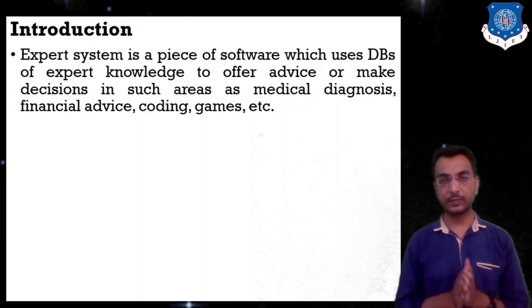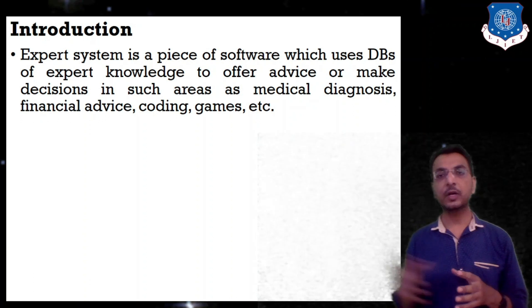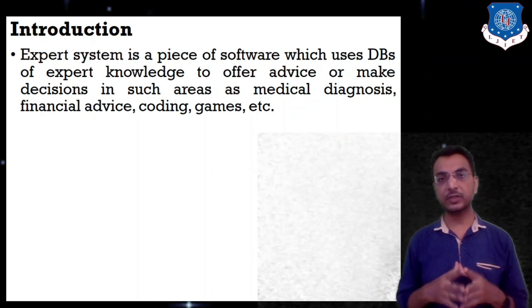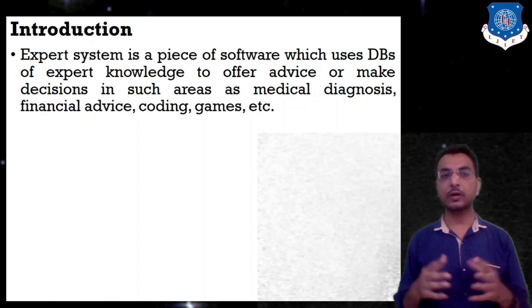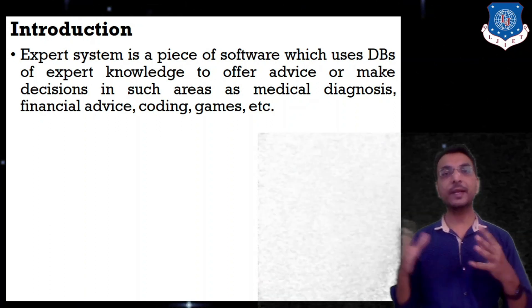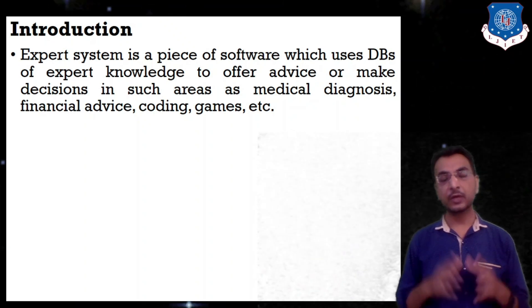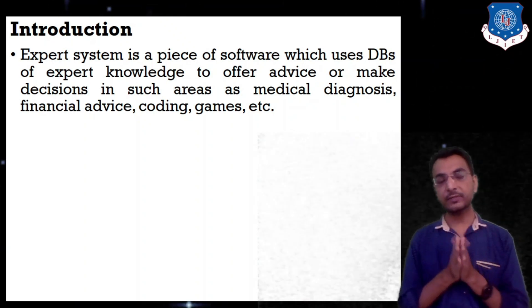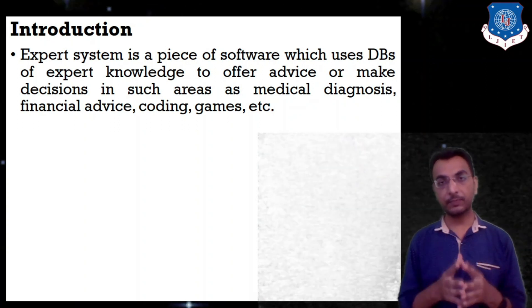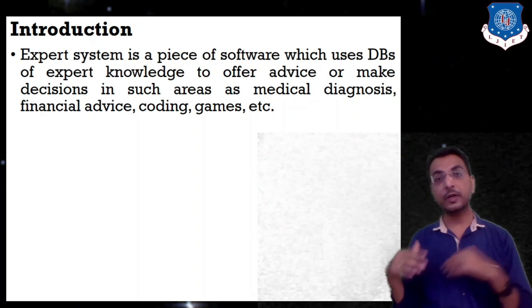First of all, what is an expert system? An expert system is a piece of software which uses databases of expert knowledge to offer advice or make decisions in areas such as medical diagnosis, financial advice, coding, games, etc. So an expert system is a software — we can say it is an application.